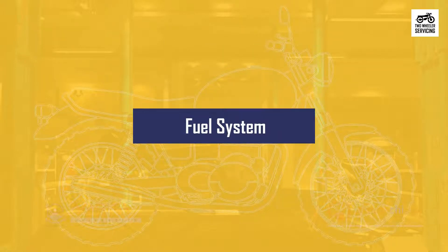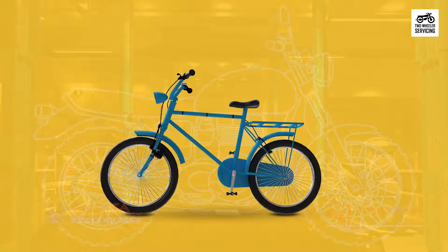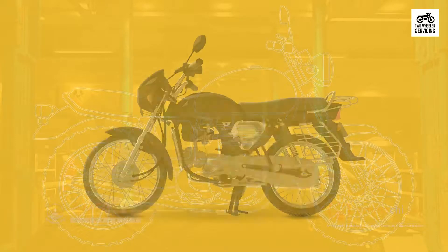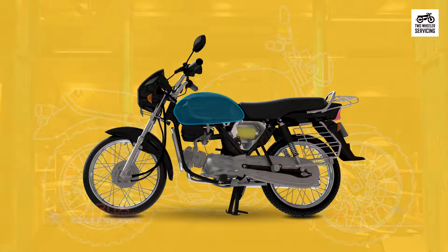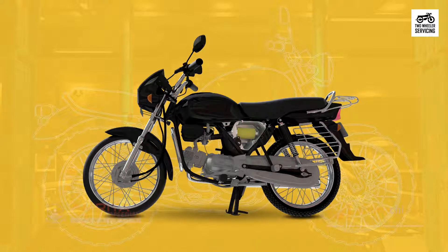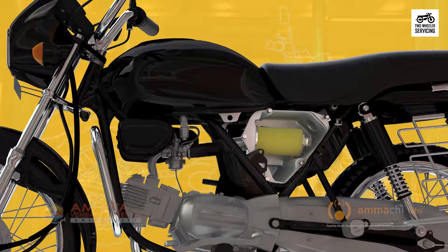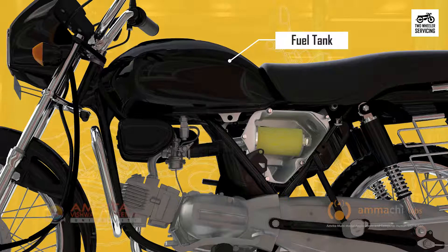Next is the fuel system. The rider of a bicycle needs to have the energy to pedal — we get energy by eating food. The motorcycle also needs an energy source and gets it by burning fuel. Fuel and air are combined together to generate power. The fuel system consists of the fuel tank, fuel valve, and the carburetor.